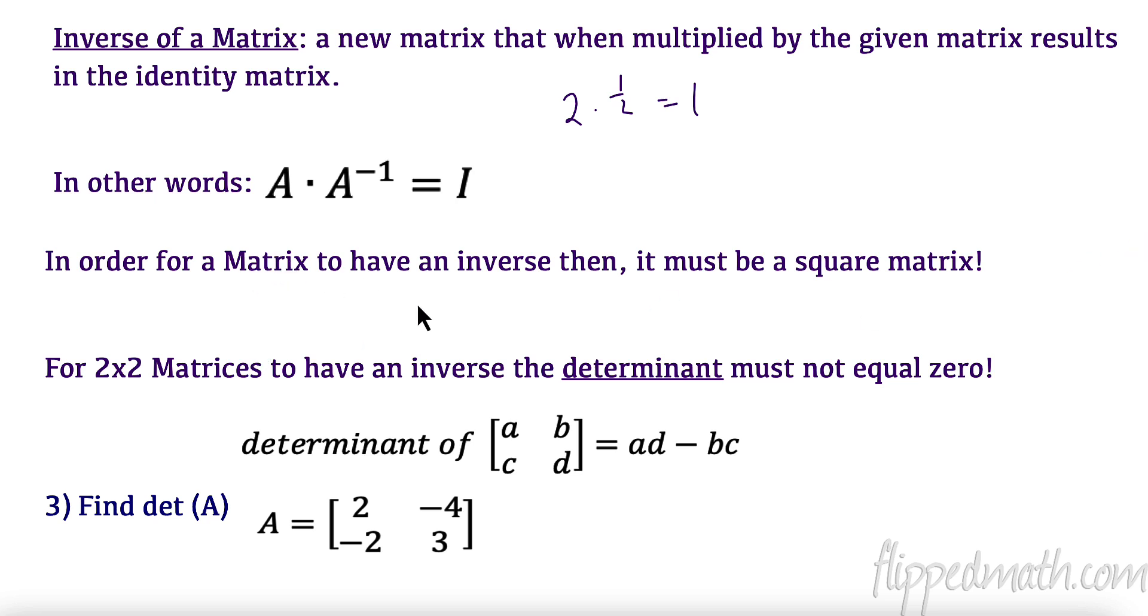In order to have a matrix, to have an inverse, it has to be square. So, we cannot have an inverse of matrices that are 3 by 2s, or 2 by 3s, or 4 by 5s. It has to be a square matrix. It's really important. And, for the 2 by 2 matrices to have an inverse, the determinant must not equal 0. So, what is the determinant? The determinant is this formula. If I have a matrix, A, B, C, D, I simply multiply these, and multiply these, and subtract the two numbers.